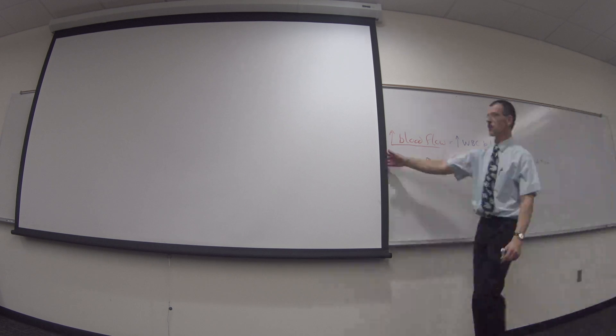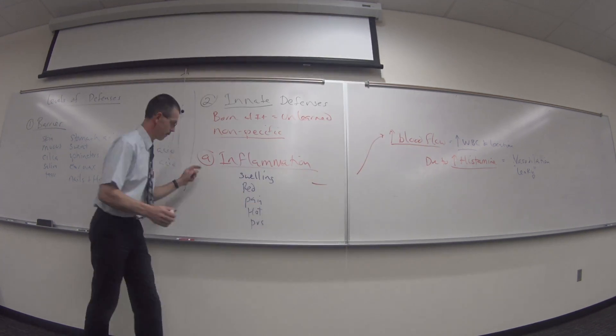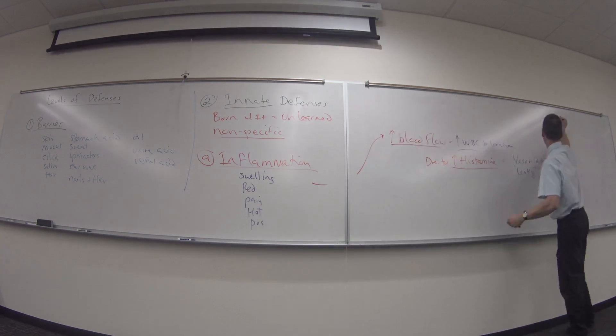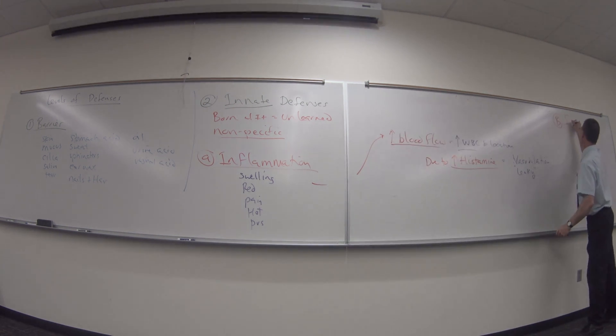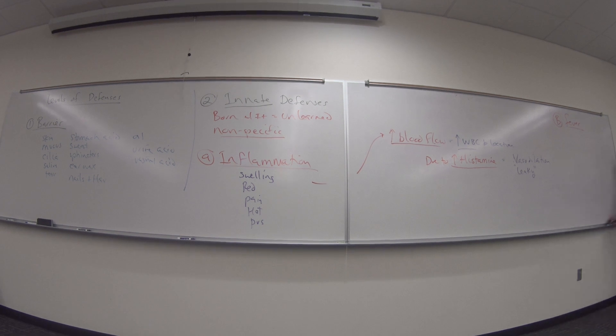But that's not the only innate defense we have. That was one of them. Let's keep going on our list. Letter B, another innate defense, is fever. Why do you want a fever? What's it do for defense? It kills things. Makes it go faster.